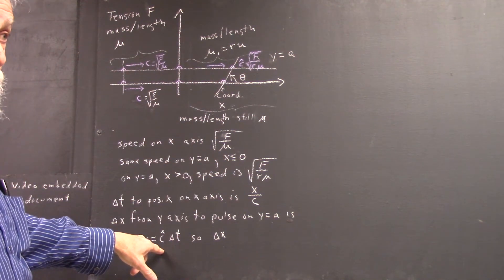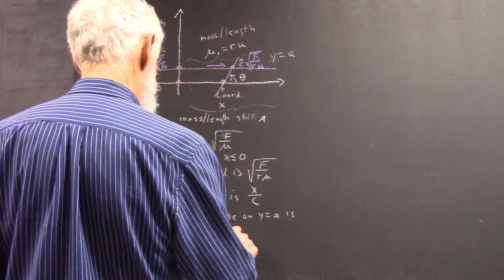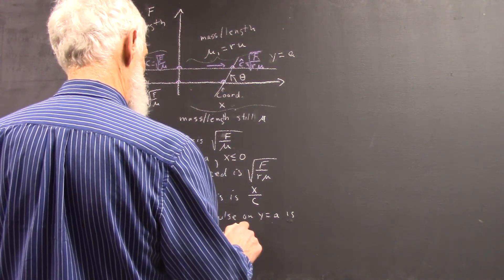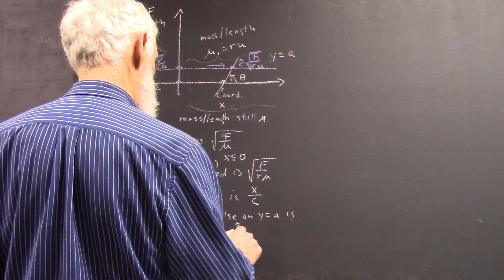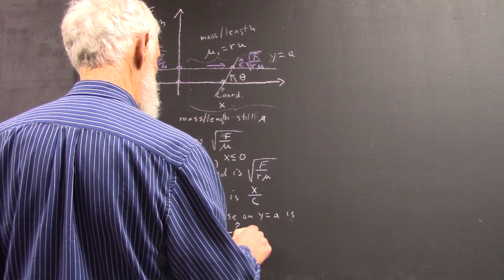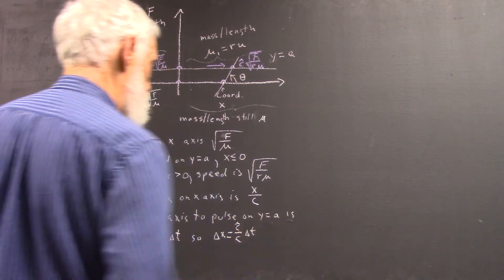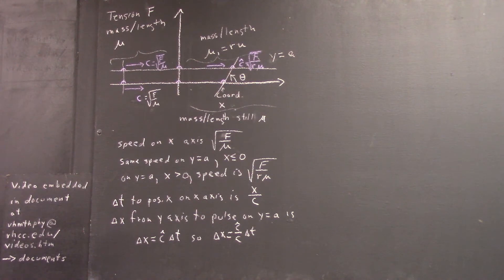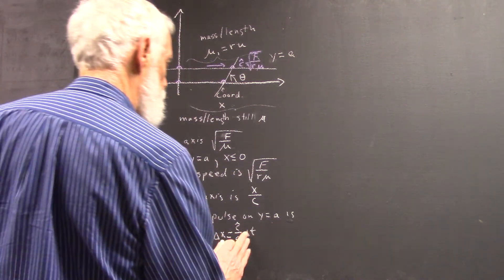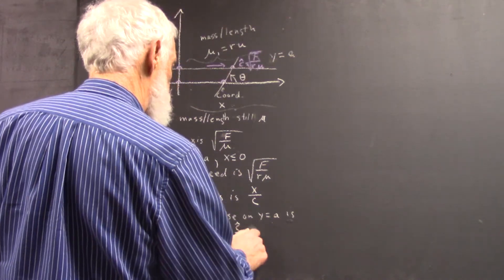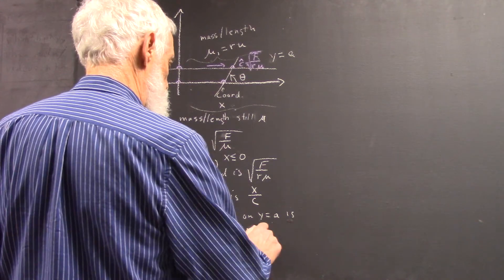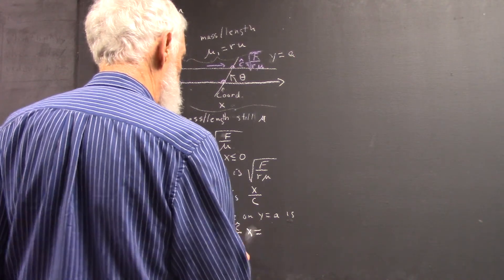So delta x is equal to what? It's equal to c-hat over c times delta t, right? Times x. And what's the ratio of c-hat to c?